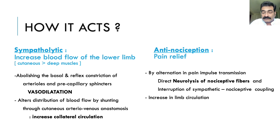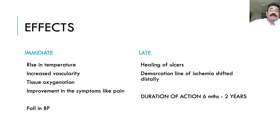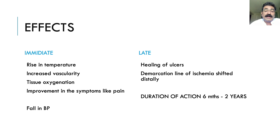The immediate effect is a rise in temperature of the lower limb due to increased vascularity. On the table, we can observe engorgement of the veins — collapsed veins become engorged. A one to two degree Celsius rise in temperature is measurable. Pulse oximeter on the toes shows good waveforms and improvement. Pain relief occurs within 10 to 15 minutes on the table. Blood pressure may fall due to sympatholysis. The late effect is ulcer healing over weeks to months, with the demarcation line of ischemia shifting distally — from above knee to below knee, from below knee to ankle, and from ankle to toes. Duration of action is around six months to two years.